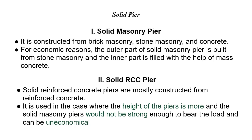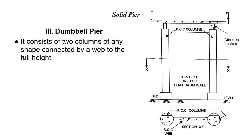The Dumbbell Pier is the third type of solid pier. In its cross-sectional view, it consists of two RCC columns on the two sides and an RCC web connecting the two columns, which is called a diaphragm wall.